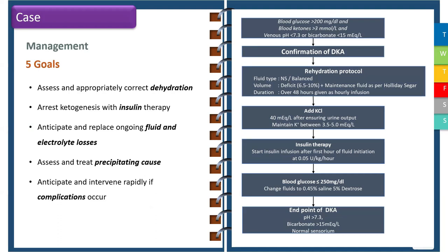Assume a fluid deficit of 6.5% to 10% depending on the degree of clinical dehydration, and add this to the maintenance fluid calculated using the Holliday-Segar formula. Correction is given over 48 hours as an hourly infusion. Potassium chloride is added at 40 mEq per liter after ensuring adequate urine output, with the intention to maintain potassium between 3.5 and 5 mEq per liter. Insulin therapy is started after the first hour of fluid initiation at a rate of 0.05 to 0.1 units per kg per hour.